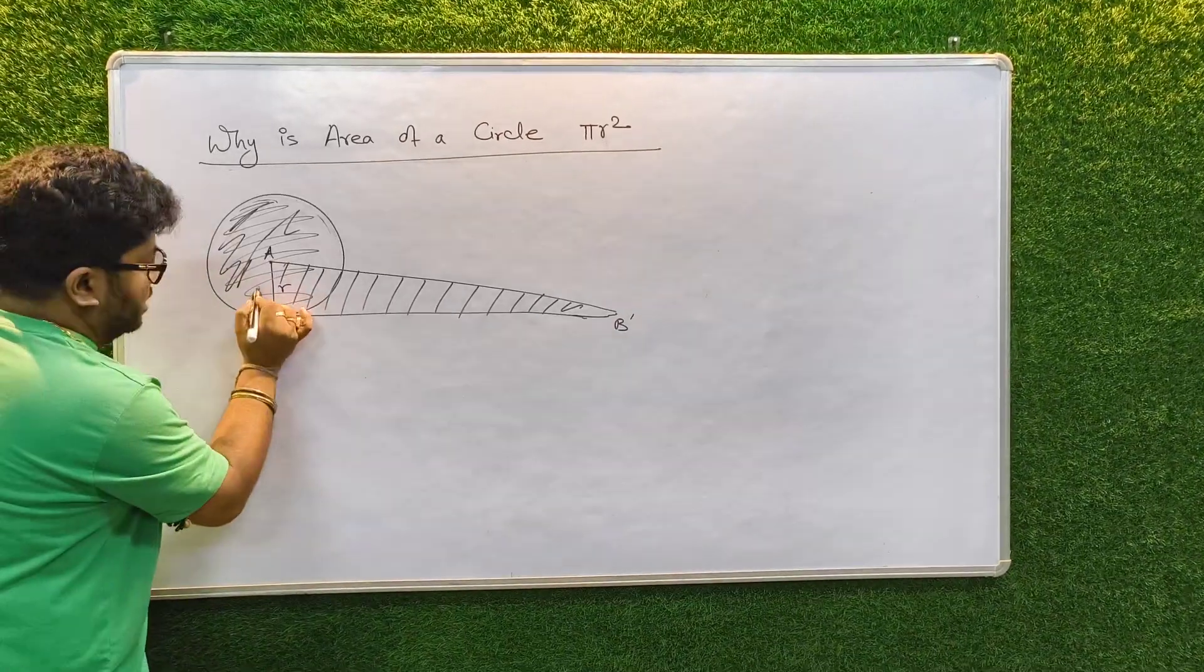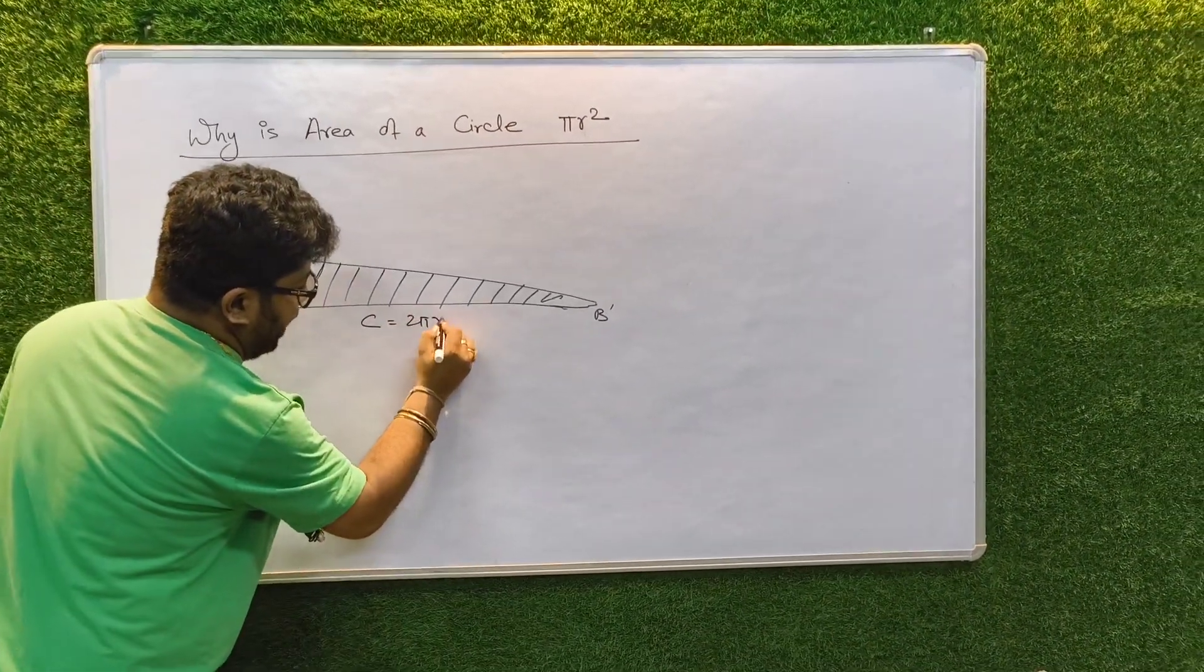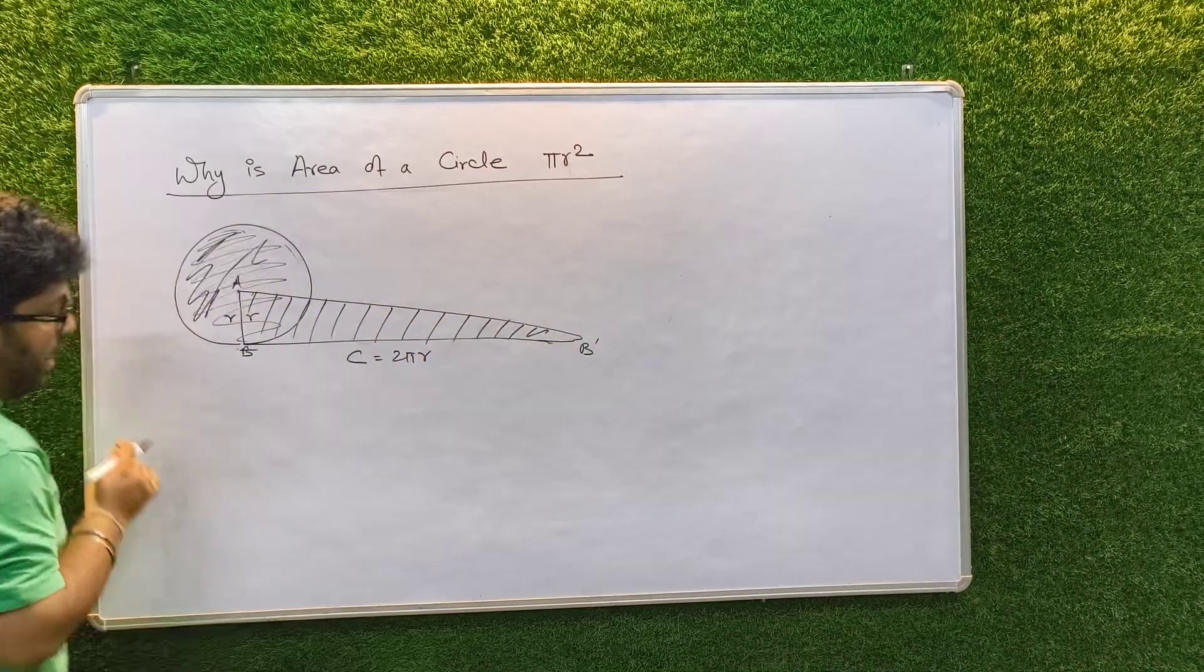So this is r and this circumference is equal to 2 pi r. The circumference is 2 pi r. So this becomes 2 pi r.